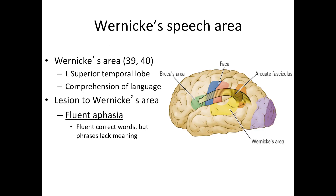Next is Wernicke's area, also called Wernicke's speech area. The name comes from Dr. Carl Wernicke, a German neurologist who related neural diseases to specific brain areas. He identified Wernicke's area and its involvement with the comprehension of language — specifically the comprehension of both written and spoken language. Remember: Broca's area is for production of language, while Wernicke's area is for comprehension.